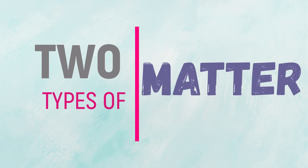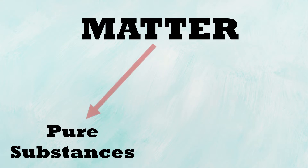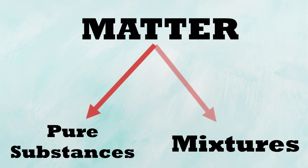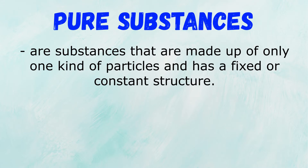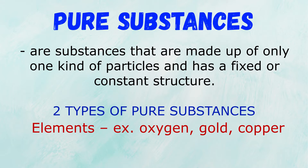Two types of matter: pure substances and a mixture. Pure substances are substances that are made up of only one kind of particles and have a fixed or constant structure. The two types of pure substances are elements and compounds.